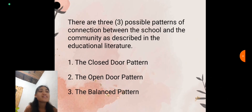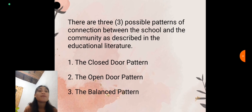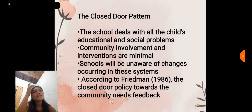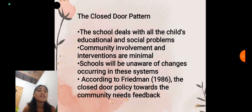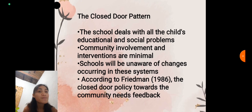There are three possible patterns of connection between the school and the community as described in educational literature: the closed-door pattern, the open-door pattern, and the balanced pattern. In the closed-door pattern, the school deals with all the child's educational and social problems, community involvement is minimal, and the school is unaware of changes occurring in the system. According to Fred Mann in 1986, the closed-door policy towards the community needs feedback.